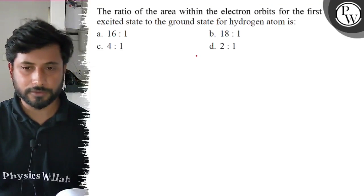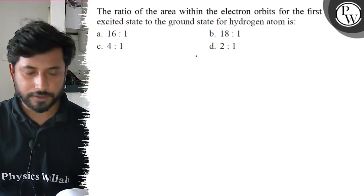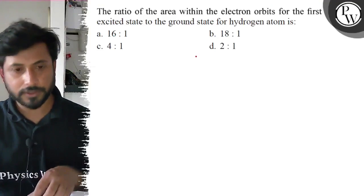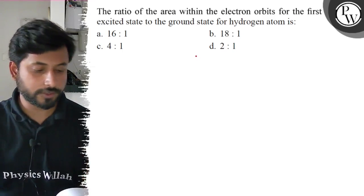The ratio of area within the electron orbits for the first excited state to the ground state for hydrogen atom is: Option A, 16 is to 1; Option B, 18 is to 1; Option C, 4 is to 1; Option D, 2 is to 1.